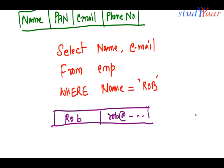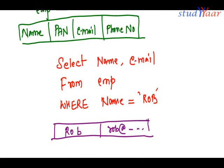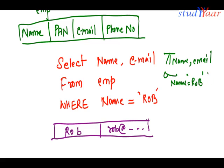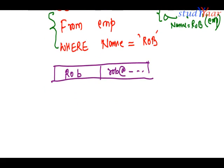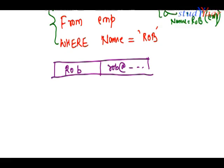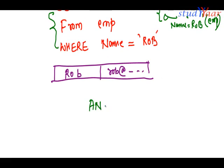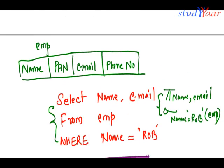This result gives us name as Rob and email as rob@somewhere. This is the same as what we did in relational algebra — we had PROJECT name, email (SELECT name = Rob FROM emp). So the combination of SELECT and PROJECT operators maps to SELECT-FROM-WHERE in SQL.